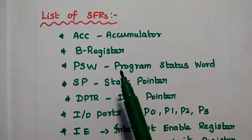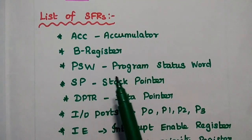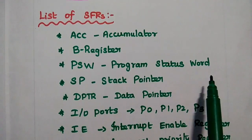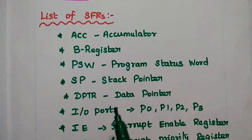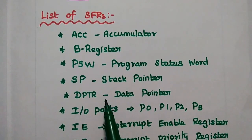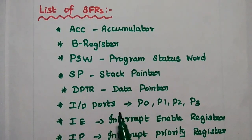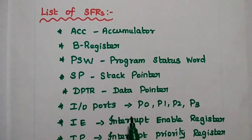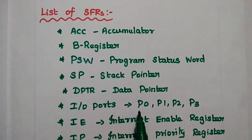The SFRs include: accumulator, B register, PSW (program status word register), stack pointer, data pointer, and input-output ports. In AT51, there are 4 parallel 8-bit ports.